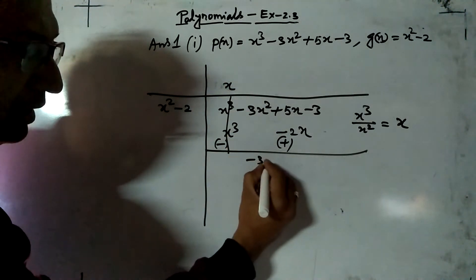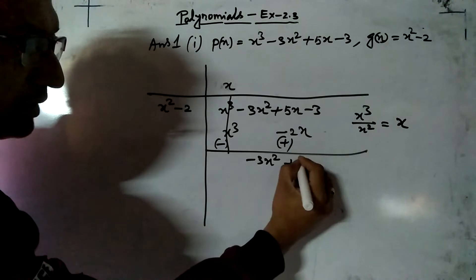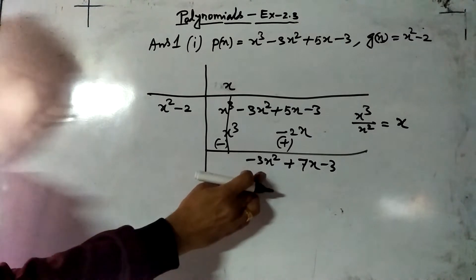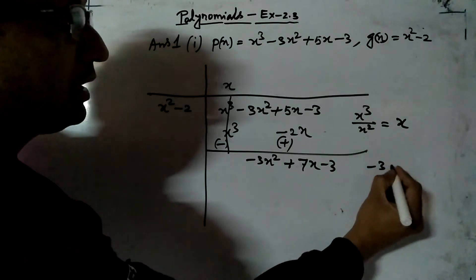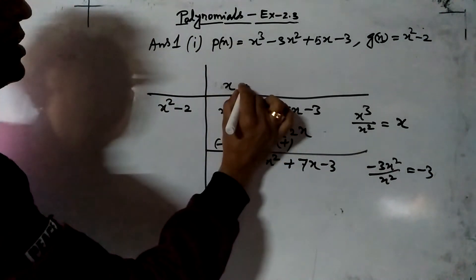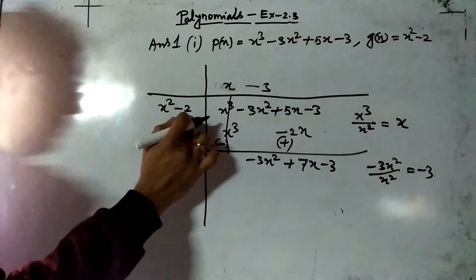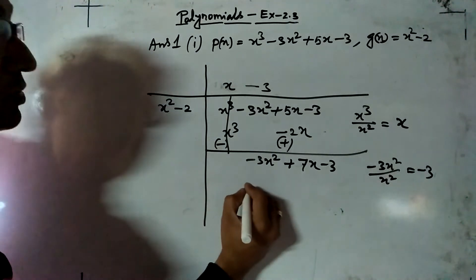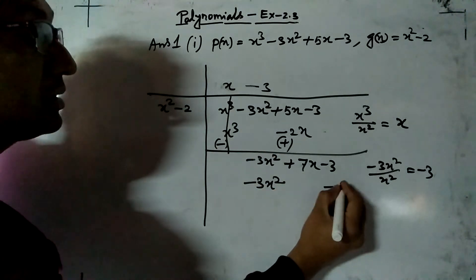After subtraction, we get -3x² + 5x + 2x = -3x² + 7x - 3. Now, for the second term of the quotient, we divide the first term again: -3x² divided by x² gives -3. So the next term of the quotient is -3. Now multiply -3 with x² to get -3x², and -3 with -2 to get +6. Write like terms together, then subtract.